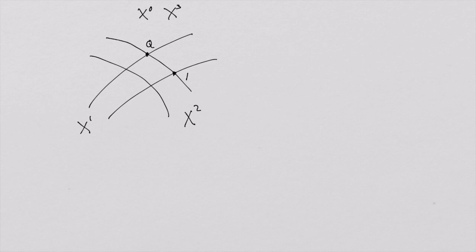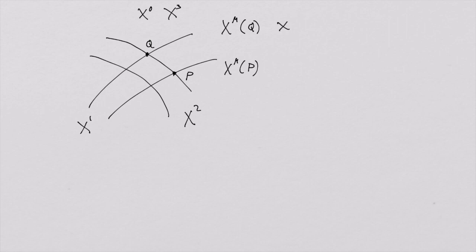All the points in space-time have names, and those names are always given by coordinates. x-mu of q would represent the coordinates at the point q; x-mu of p would represent the coordinates at the point p. We can abbreviate this with just x of q or x of p, because this index is not really the same kind of index as we've had on our vector spaces—these are not vectors. x is just a coordinate labeling all the points in space-time.